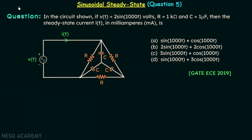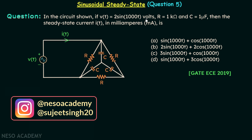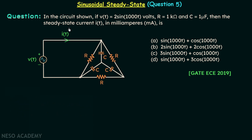In this presentation we are going to solve question number 5. According to this question, in the circuit shown, Vt is equal to 2 sin(1000t) volts, the resistances are equal to 1 kilo ohm, and the capacitances are equal to 1 micro farad. We are required to find out the steady state current I(t) in milli amperes, and there are 4 options given from which we must choose one correct option.